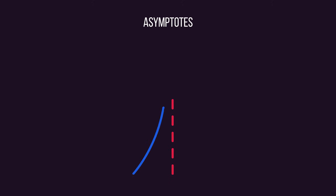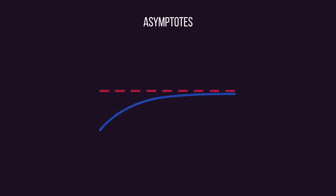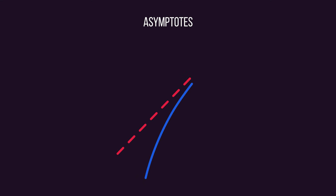So there we have asymptotes. They are vertical, horizontal, or diagonal lines where a graph approaches, but never actually reaches.